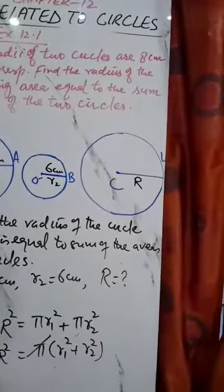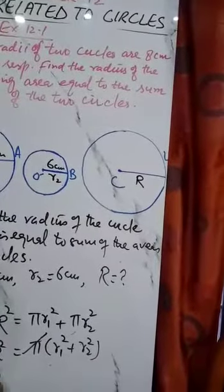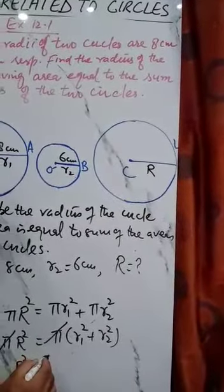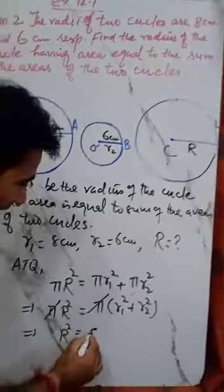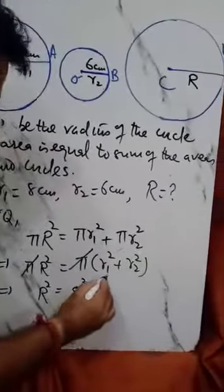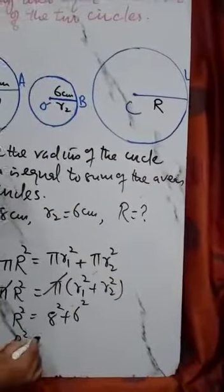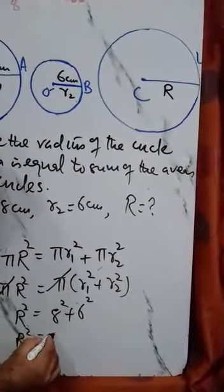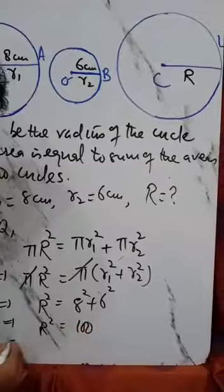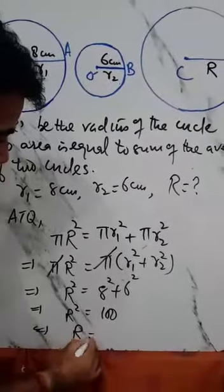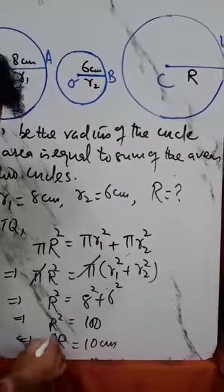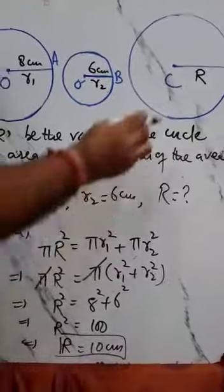Now r² equals r1 squared plus r2 squared. r1 is 8, r2 is 6. So r² = 64 + 36 = 100. What is r? r is 10 cm. Therefore, the radius of this